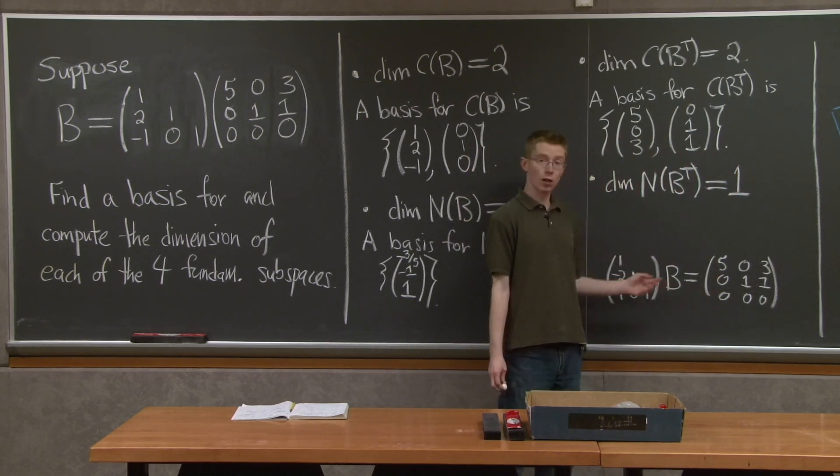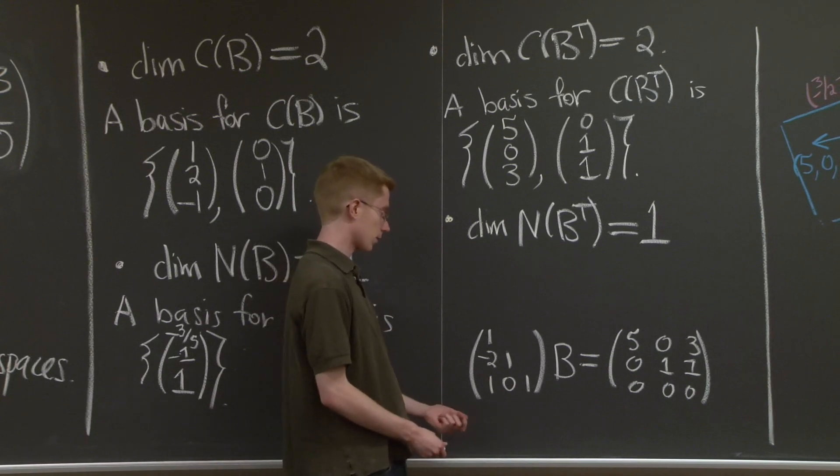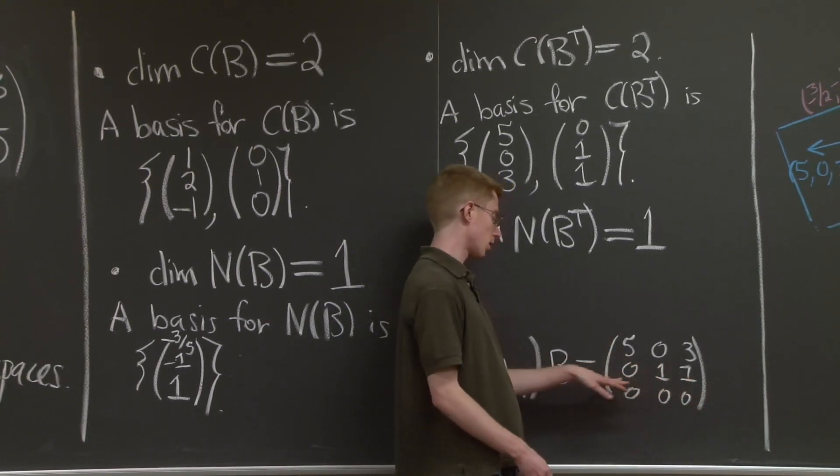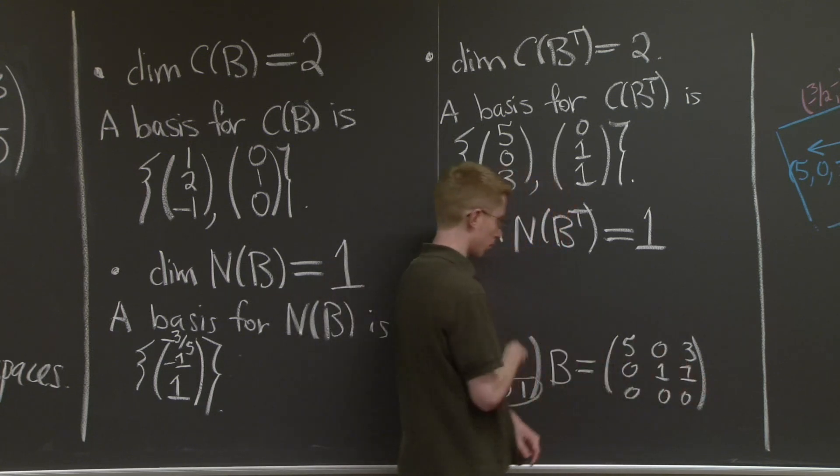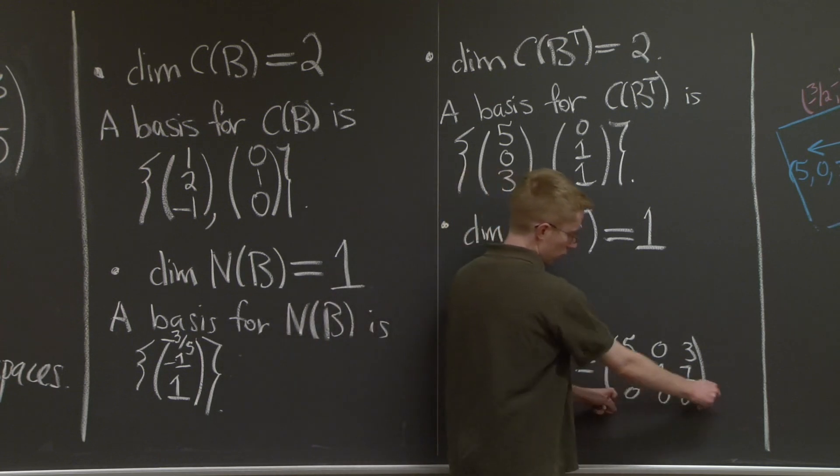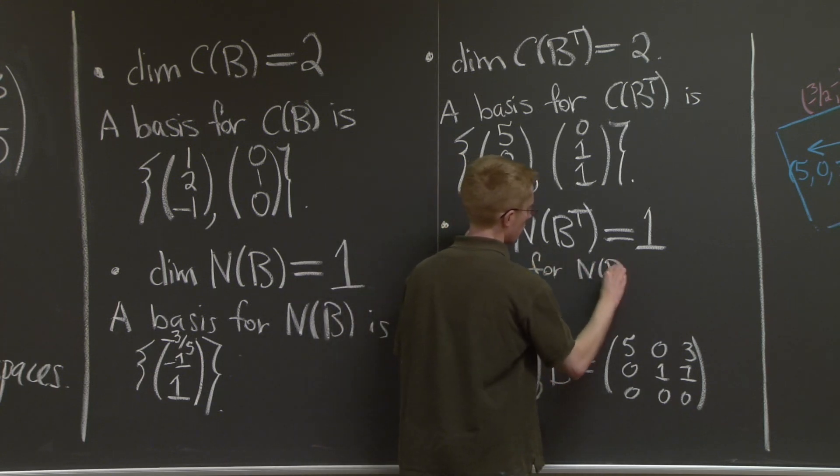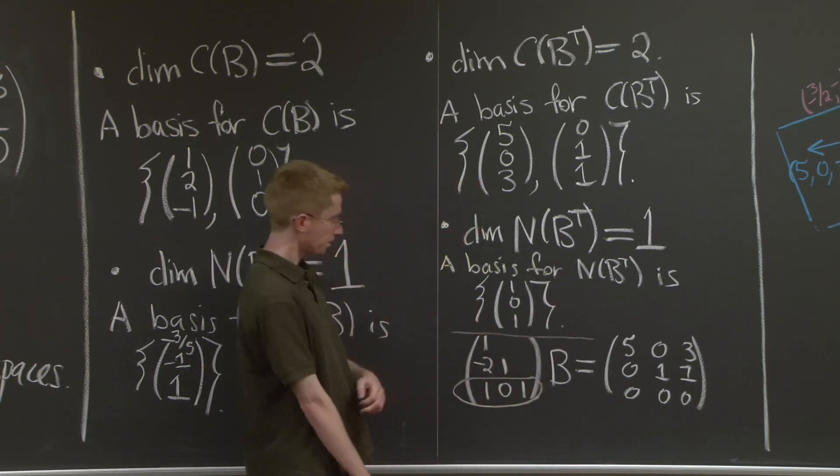And now that I've moved L over to the other side, I can read off the vectors in my left null space. I'm looking at not my pivot variables, but my free variables, because it's some sort of null space, but I want to look at this E matrix. The third row of this E matrix corresponds to the free row here. And when I multiply this by B, I just get zeros. So this is in the left null space. A basis for this left null space is just (1, 0, 1).